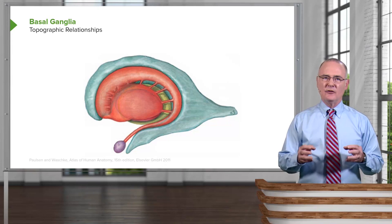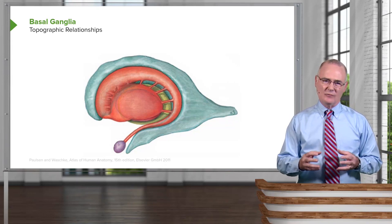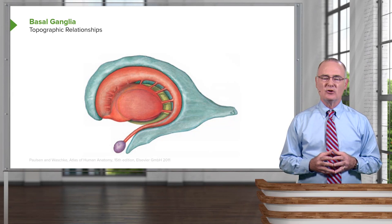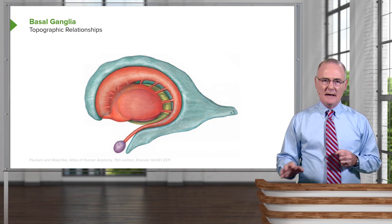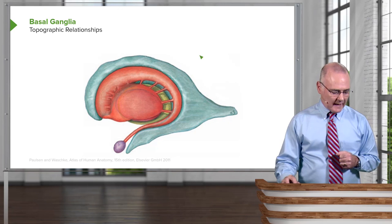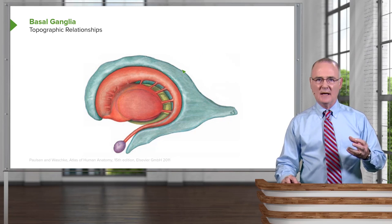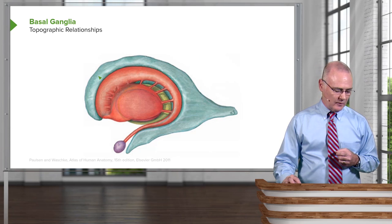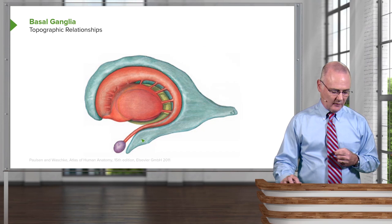This is a great three-dimensional image showing the topographic relationships of the basal ganglia. The first thing to point out here is not a member of the basal ganglia, but the lateral ventricle — shown here, coming down through here, and into the temporal area in through here.